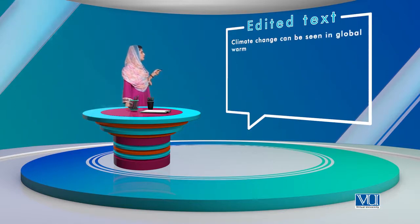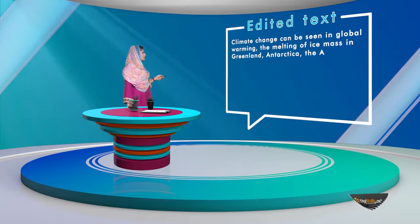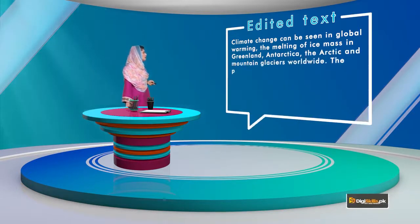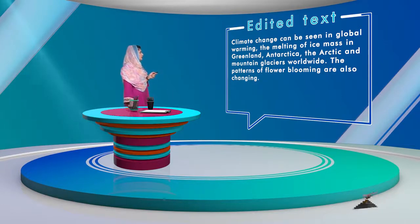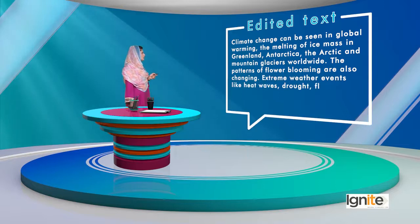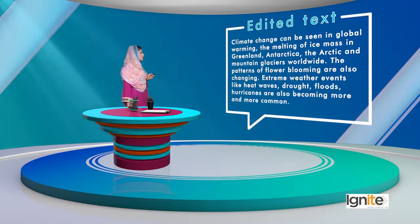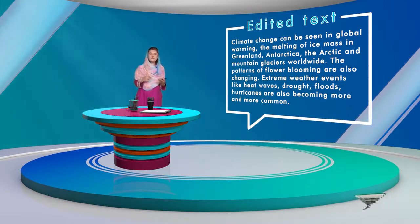'Climate change can be seen in global warming, the melting of ice mass in Greenland, Antarctica, the Arctic, and mountain glaciers worldwide. The patterns of flower blooming are also changing.' The original used the word 'shift'; here we have used the word 'change' instead. 'Extreme weather events like heat waves, drought, floods, and hurricanes are also becoming more and more common.' So this is how information can be adapted to an audience.